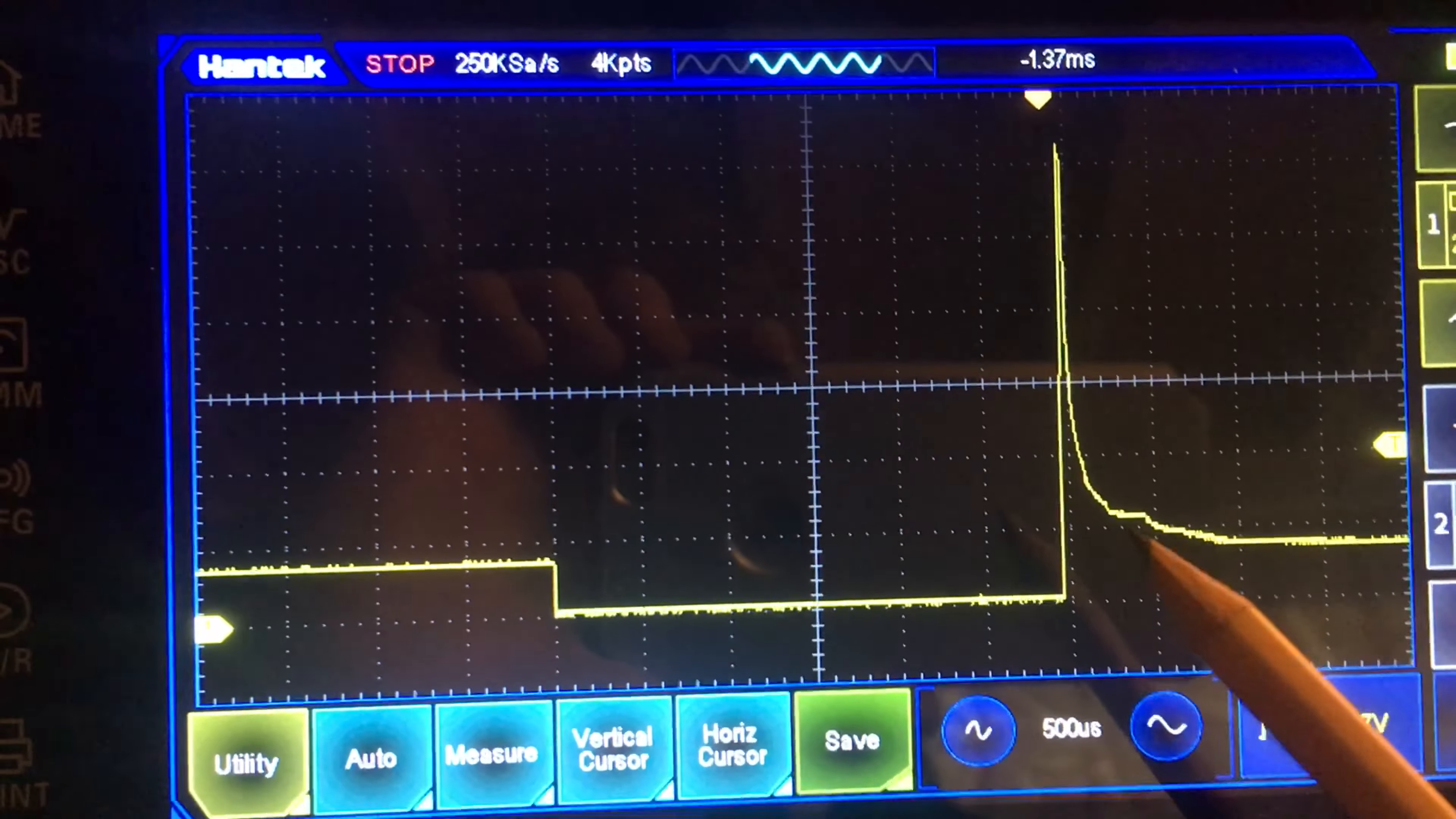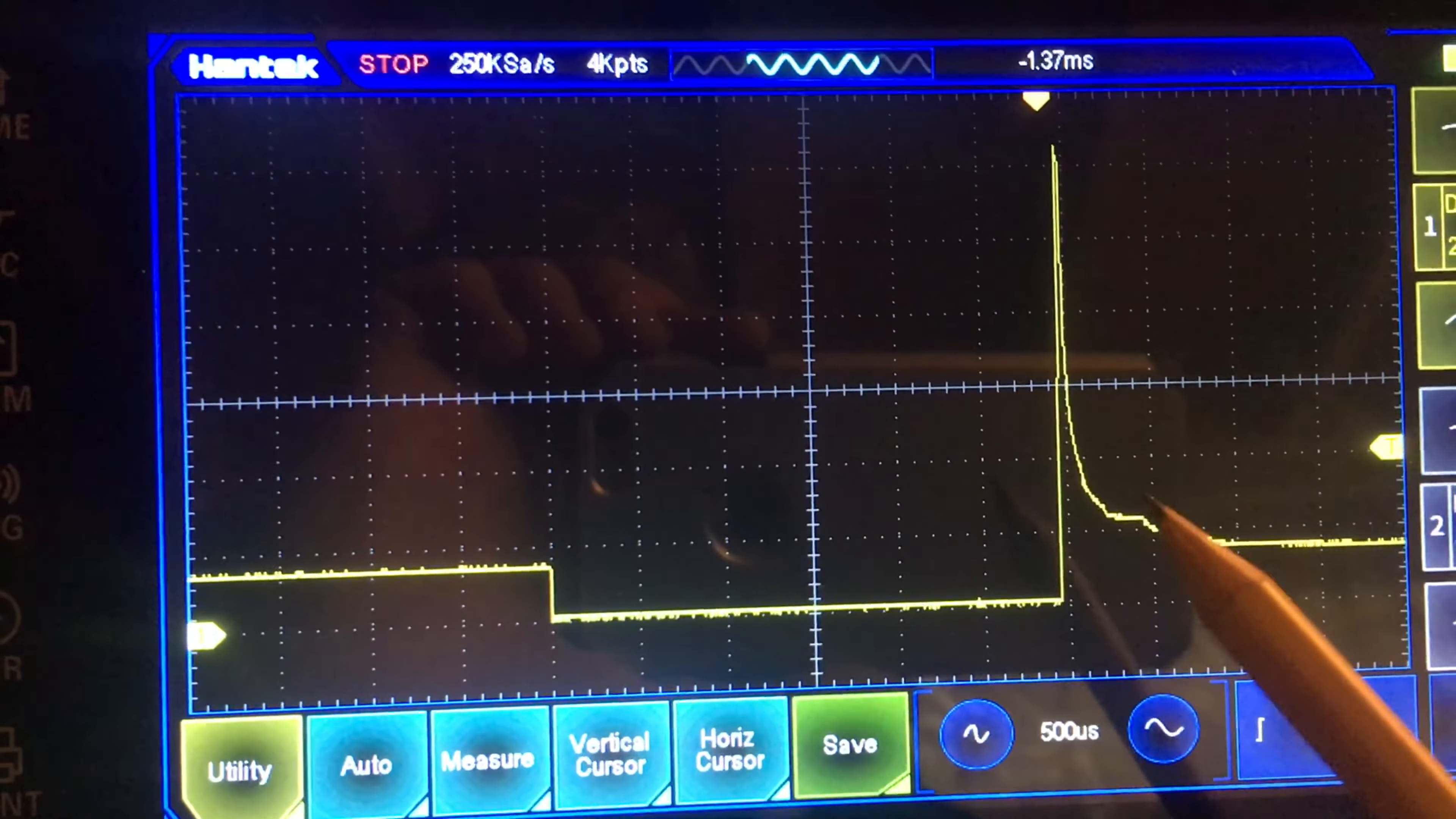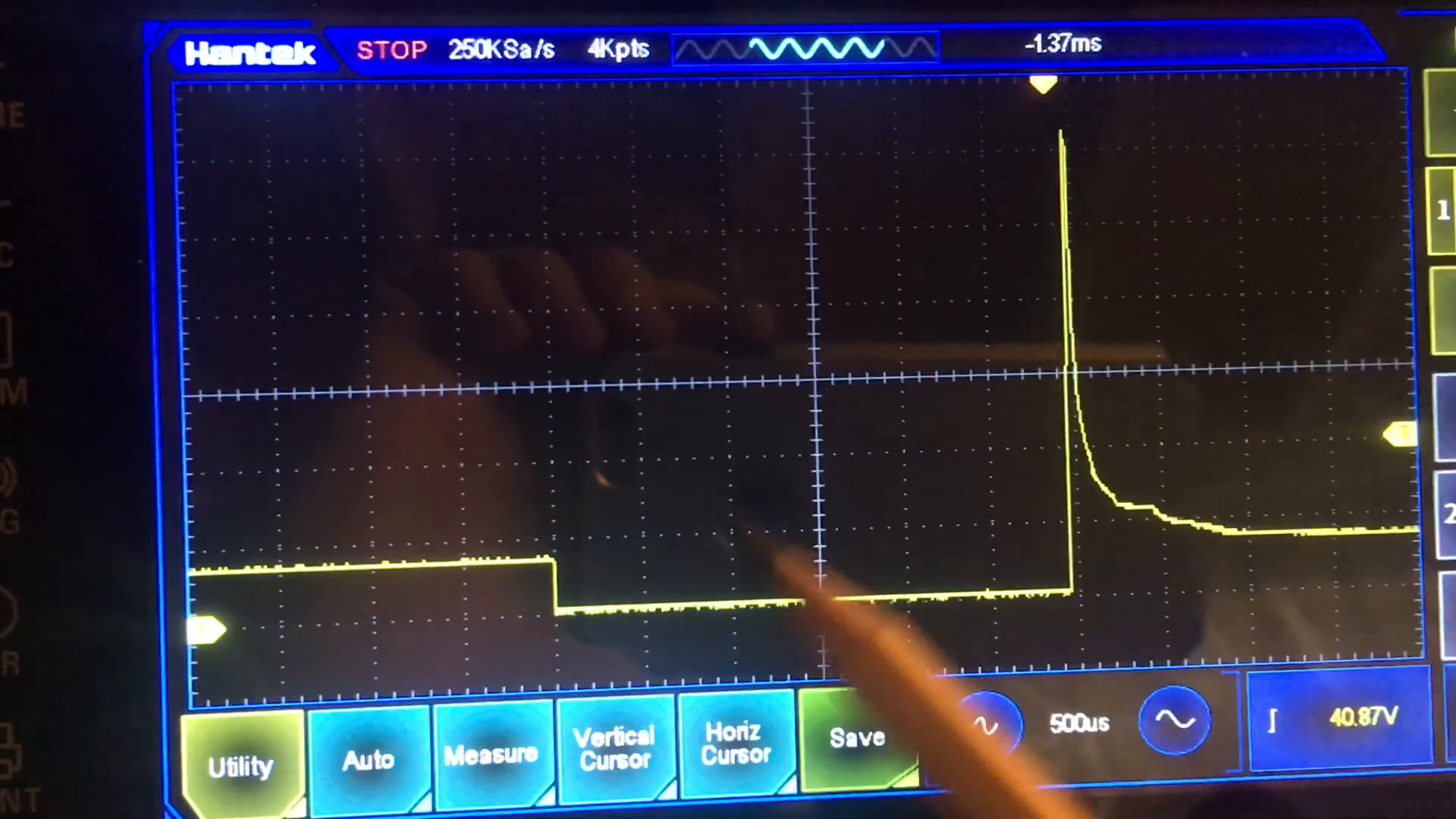That little, what looks like an insignificant artifact on the trace, is actually extremely important. Make sure that that is there. That's letting you know that the pintle has actually dropped, so the injector is closed. Of course, the ground has been lifted at this point. How do you know it's open?